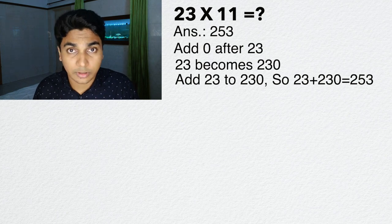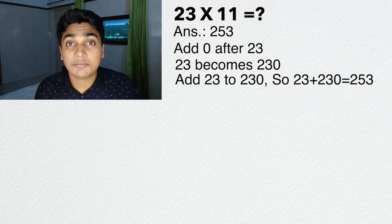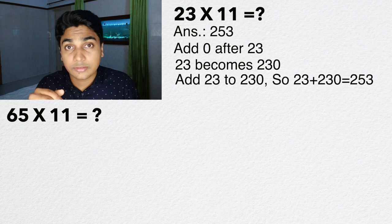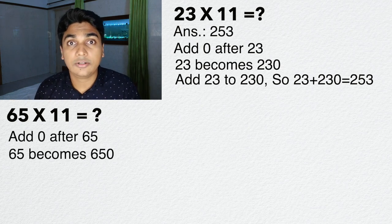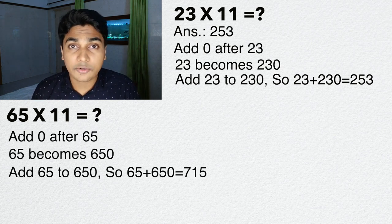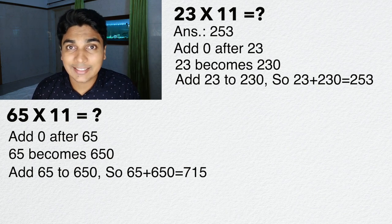Now let's take another example. What is 65 times 11? You write 0 after 65, you get 650. Now add 65 to 650. How much is it? 715.